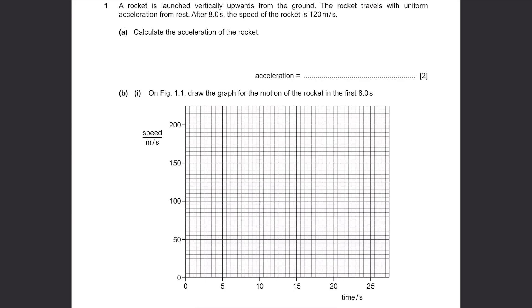The rocket travels with uniform acceleration from rest. After 8 seconds, the speed of the rocket is 120 meters per second. Part A. Calculate the acceleration of the rocket.